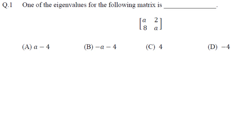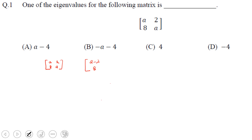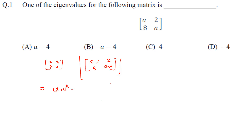Hello guys, this time I have come with GATE 2019 mathematics questions for metallurgy. The first question: one of the eigenvalues for the following matrix is given. To find the eigenvalues, we subtract some value lambda in the diagonal, then take the determinant and set it equal to 0. The determinant will be equal to (a minus lambda) whole square minus 16 equals 0.